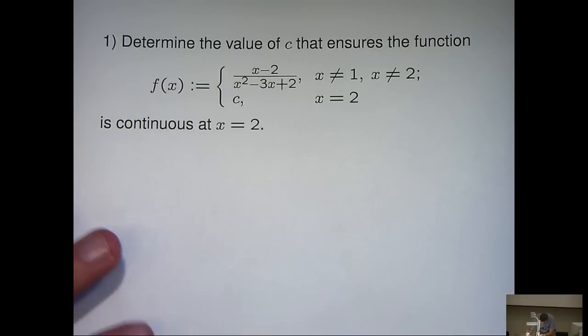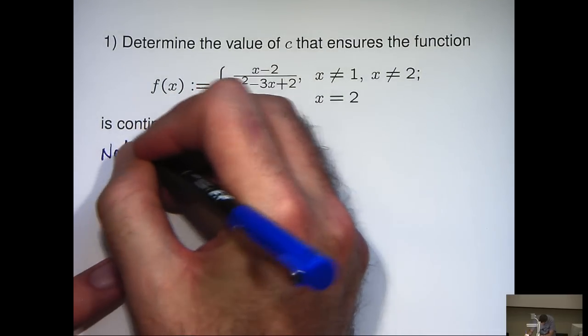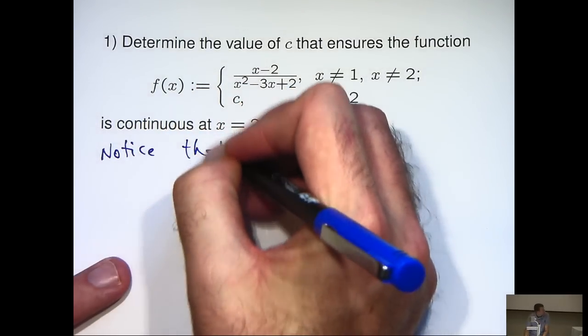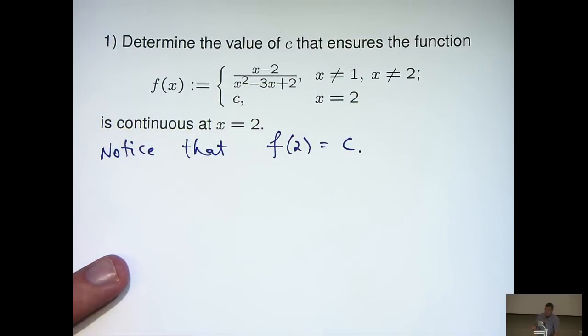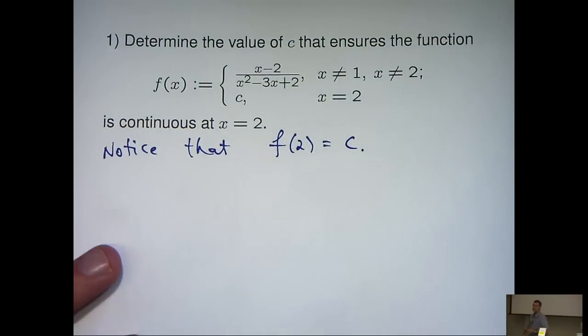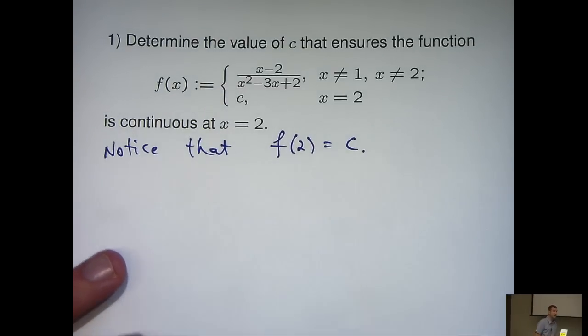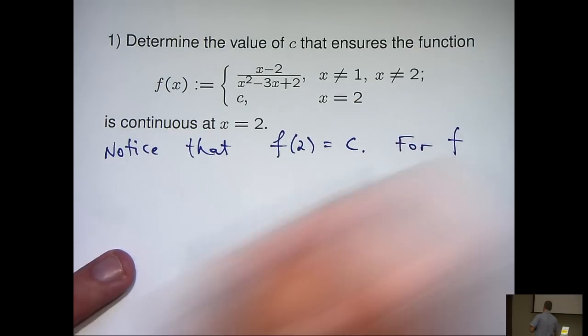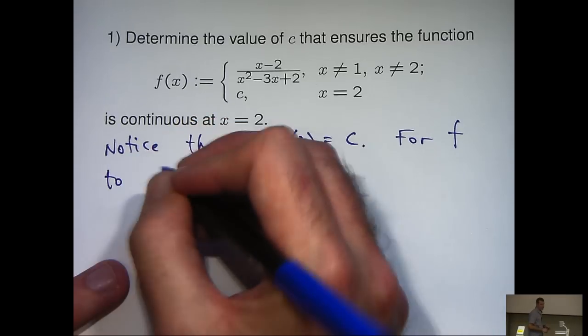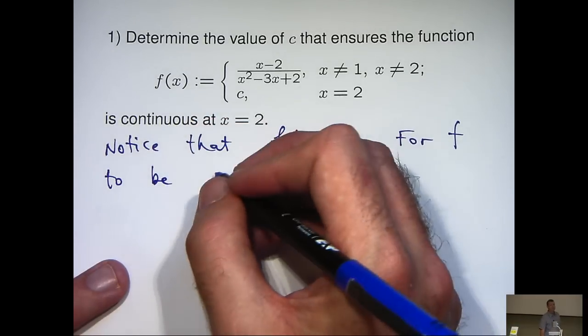Now, to solve this problem, firstly notice that f of 2 is just c. And if we remind ourselves of the limit condition for continuity of a function at a point, well we'll come up with the following.